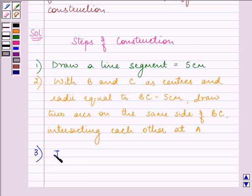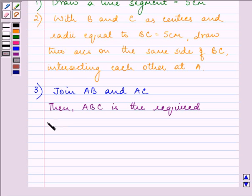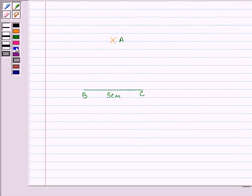Now the third step is to join A, B and A, C. And then ABC is the required equilateral triangle. So let us join these two sides.